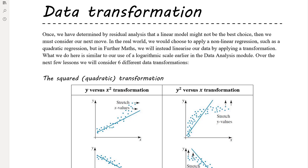What we want to look at today, as we move from Chapter 4 into Chapter 5, is to introduce the idea of a data transformation. Throughout Chapter 4, we were looking at the least squares regression line. One of the conditions for the least squares regression line, the Pearson correlation coefficient, and all of those things was that the data was linear in form.